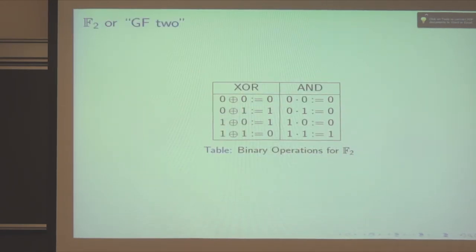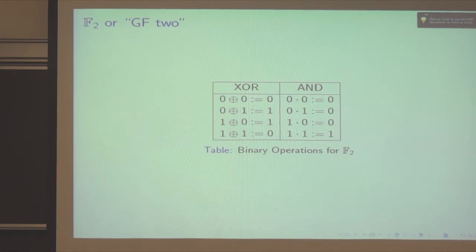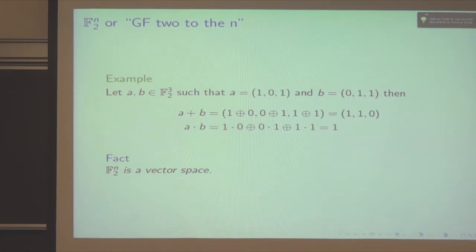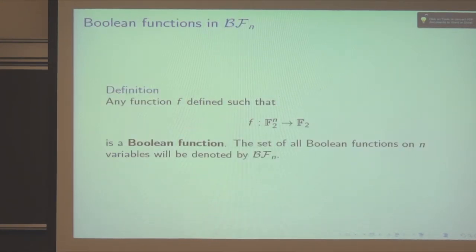Now I'll talk about Boolean functions. We have the XOR table and the AND table for GF(2). Inside the LFSR, the X's are multiplied by the Q's, which is the AND operation: it's 1 only when both inputs are the same and 1, and 0 otherwise. In GF(2)^n, you have vector spaces; you can have vectors like A and B and add them component-wise. You can also compute dot products. Boolean functions are any function from GF(2)^n to GF(2). We want to know the truth table of such a function — where it's 0 and where it's 1 for all input vectors.